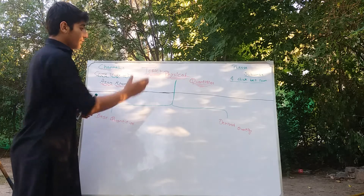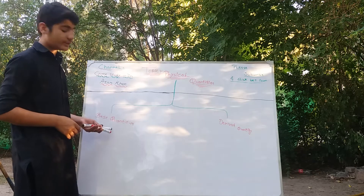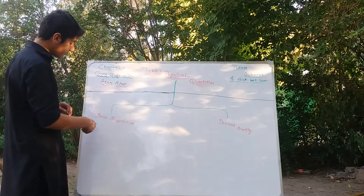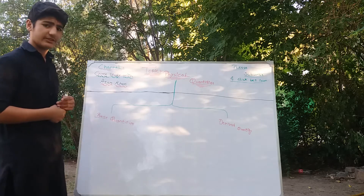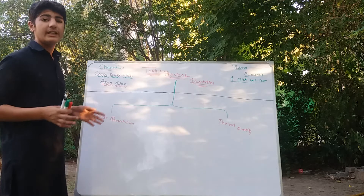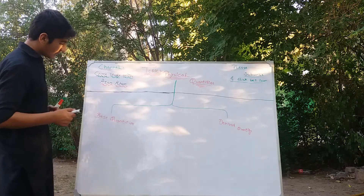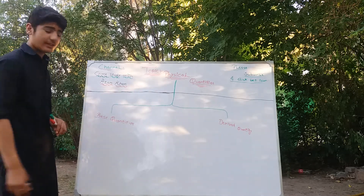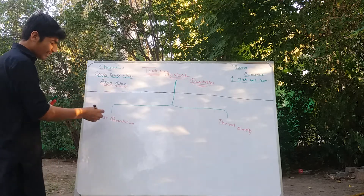Physical quantities are the quantities which are measurable, and from them we get derived quantities and base quantities. Base quantities are also measurable because they are part of physical quantities.